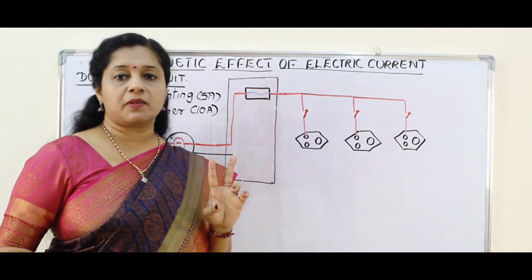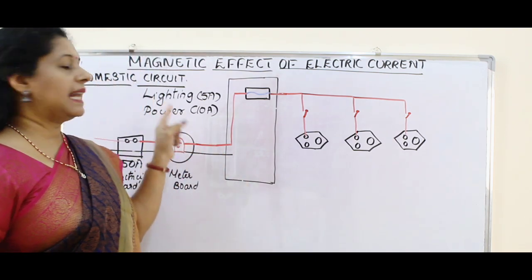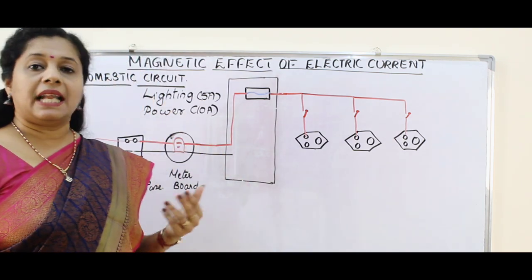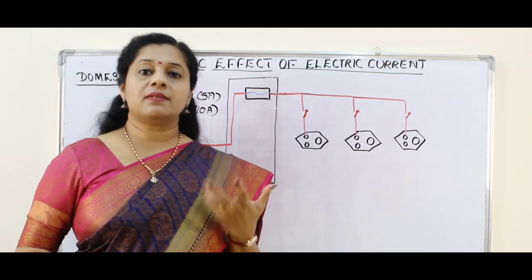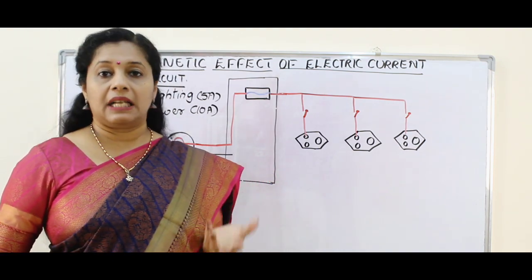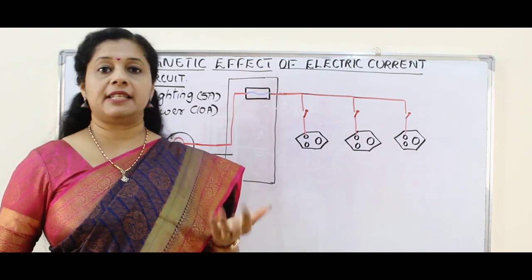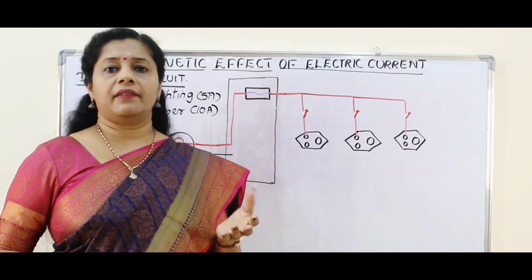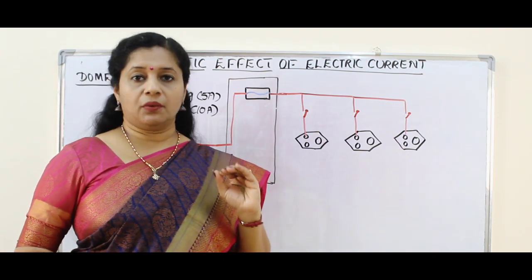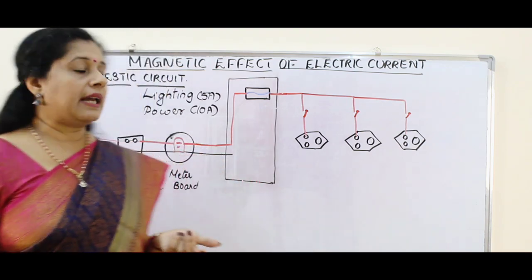We actually have two types of circuits in our household. One is called a lighting circuit and the other is called a power circuit. The lighting circuit involves gadgets which use less power — for example, tube light, bulb, fan, TV, and radio. All these have less power, so they are all connected in a lighting circuit.